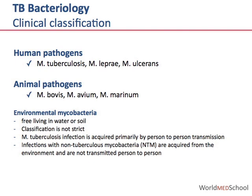The main animal pathogens are Mycobacterium bovis, Mycobacterium avium, and Mycobacterium marinum. Many mycobacteria are free-living in the water and soil, and only cause disease in humans or animals as opportunistic infections. Hence, the classification between human and animal pathogens is not a strict classification.